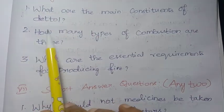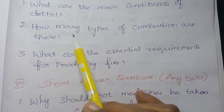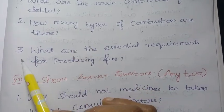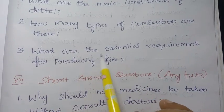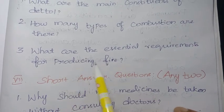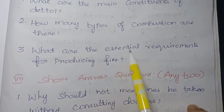Second: how many types of combustion are there? Third one: what are the essential requirements for producing fire? To produce fire, what requirements are needed?